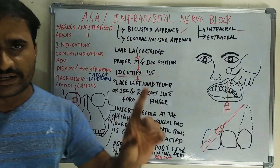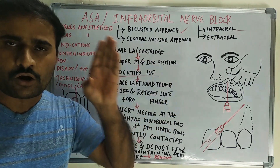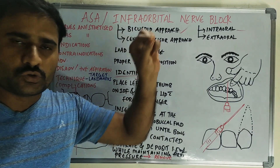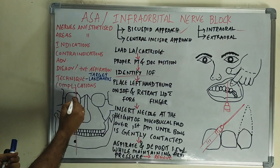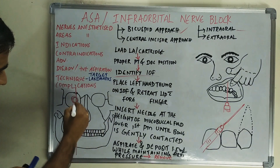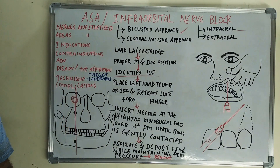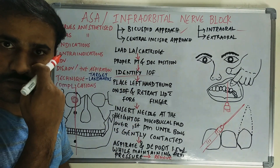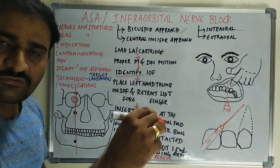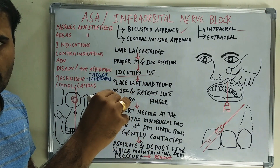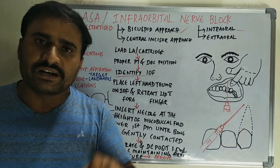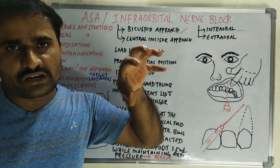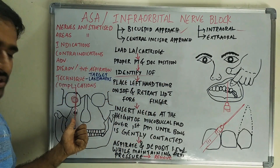To identify the infraorbital foramen, ask the patient to look straight ahead. Drop a vertical line from the pupil position down to the infraorbital region. First identify the infraorbital rim — the bony prominence below the eye. Approximately 0.5 to 1 cm below the infraorbital rim, you will feel a depression or notch — that is the exact location of the infraorbital foramen. Applying pressure there will cause the patient to complain of soreness, confirming the correct location.